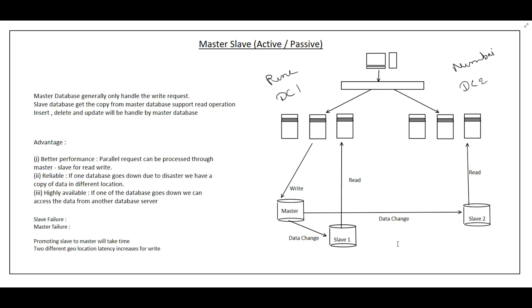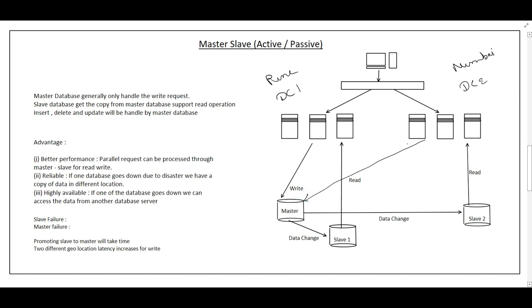The master handles write operations and slaves handle all read operations. If data center 2 also wants to write something, the write request goes to the master. Since the requests are coming from Mumbai to Pune, there may be latency. Any write to the master is immediately replicated to the slaves, so read requests from both Mumbai and Pune sites will get updated data.